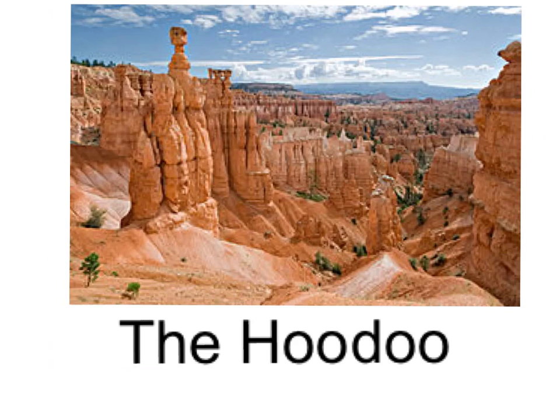Hoodoos were formed by ice erosion. They used to be flat ground until they had little tiny cracks in the rock. When water goes into the cracks and freezes, they break into columns and become hoodoos. This is how hoodoos were formed.